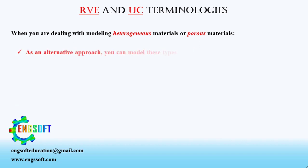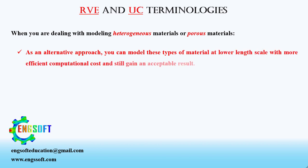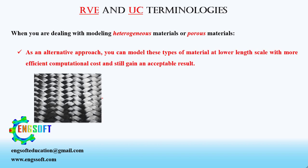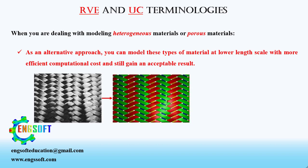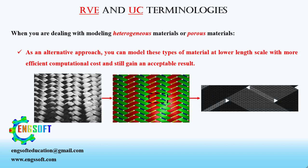As an alternative approach, you can model these types of material at a lower length scale with more efficient computational cost and still gain an acceptable result. You can determine an appropriate finite volume containing all constituents of the material, which is representative of that material. This volume is known as a representative volume element or unit cell.